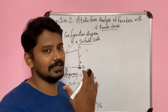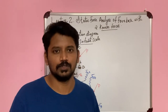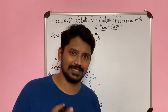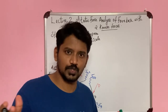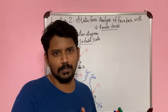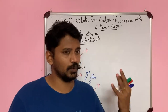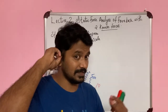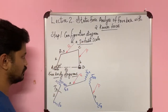Hi everyone. Now let us see the procedure to draw the static force analysis for a four bar chain with two known forces. In the earlier video we had seen the static force analysis for a slider crank chain with two known forces. The process is somewhat similar — almost all the steps are similar, but instead of a slider we have another bar, and due to that some minute differences are there. So if you have studied static force analysis of slider crank with two forces, this will be easy for you.